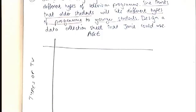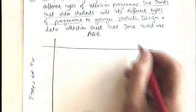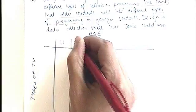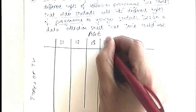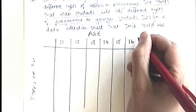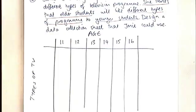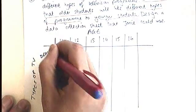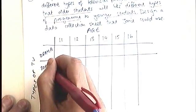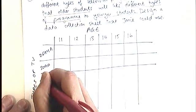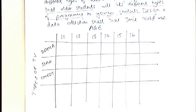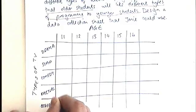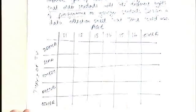You need to come up with sensible things and you can always include an 'other' category. For age, if Janey's in a secondary school, we're probably looking at people who are 11, 12, 13, 14, 15, and 16. Put those categories along the top. Then down the side we've got types of television shows — drama, soap, comedy, factual programs like the news or documentaries, and then an 'other' category. Maybe include an 'other' for age too in case she asks some teachers.